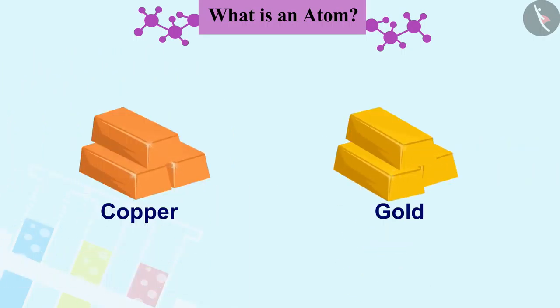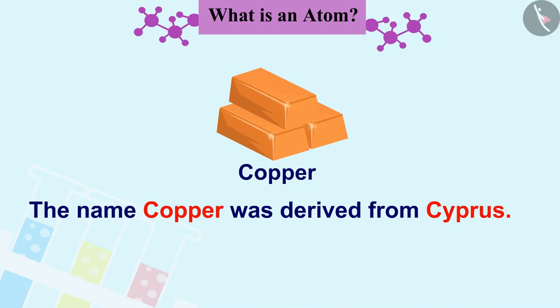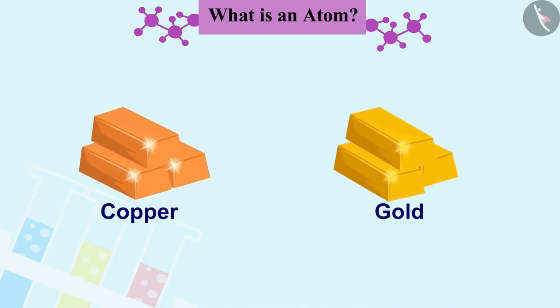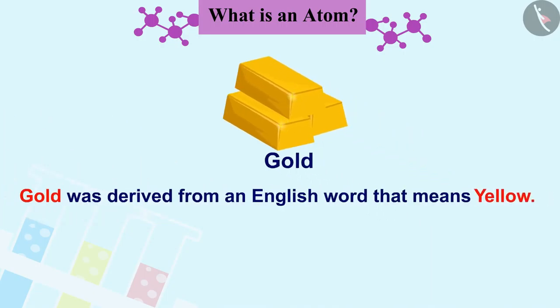Initially, the names of the elements were derived from the names of the places where they were found first. For example, the name copper was derived from Cyprus, and some elements were named after specific colors. For example, gold was derived from an English word that means yellow.